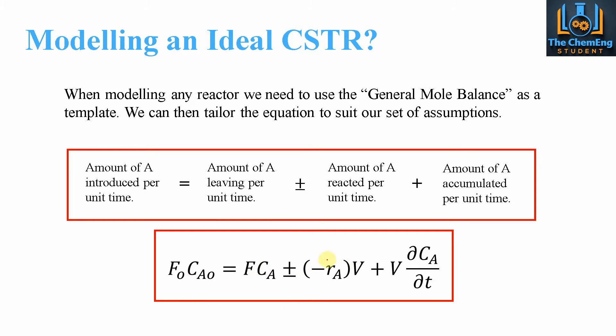And then for the actual reaction itself, what we have is the rate expression, so minus rₐ, multiplied by the volume of the system, plus, and then the accumulation term is the volume multiplied by the partial differential of the concentration with respect to time.